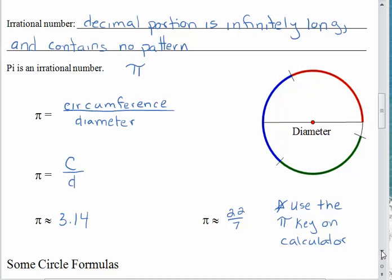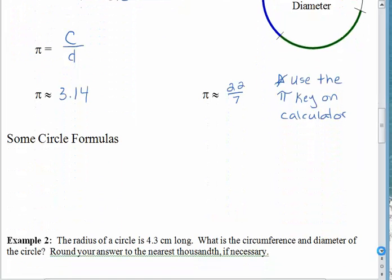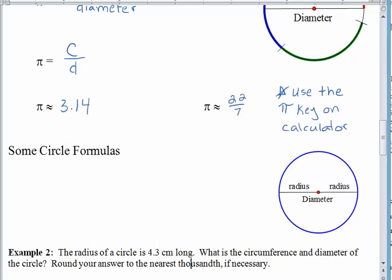So this is the button we want to use whenever we are working with pi. If we put in 3.14, we're using a rounded value. We're introducing error into our calculations before we even get started. Let's get back to our notes.